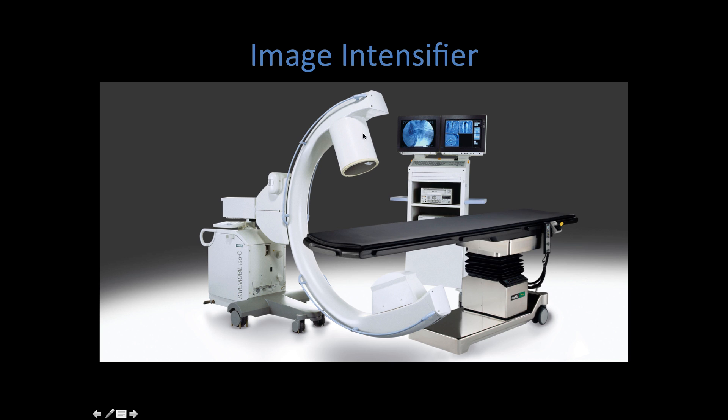The image intensifier tube has a resolution of five line pairs per millimeter, while the conversion to the TV system degrades that image to about two line pairs per millimeter. Again, this is a classic C-arm. The x-ray generator is located at the bottom. You should be able to identify the two different components of the C-arm.